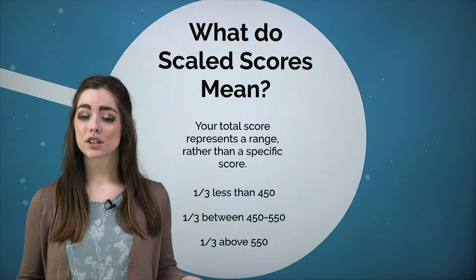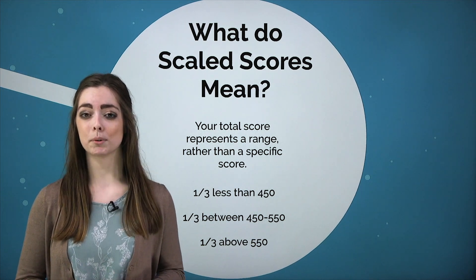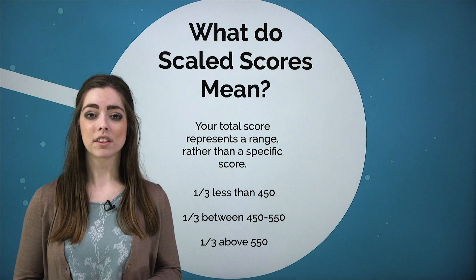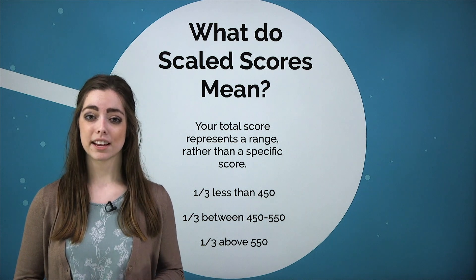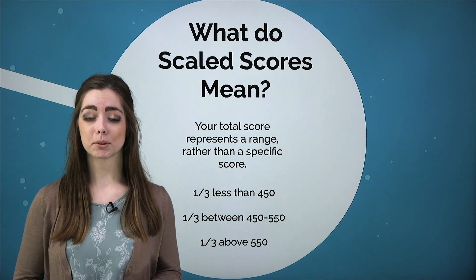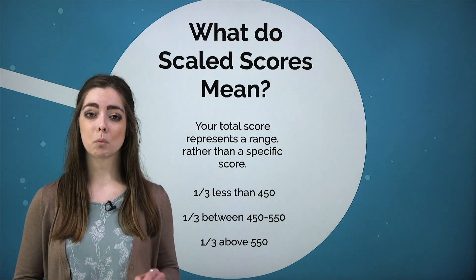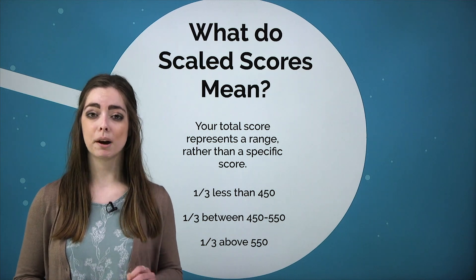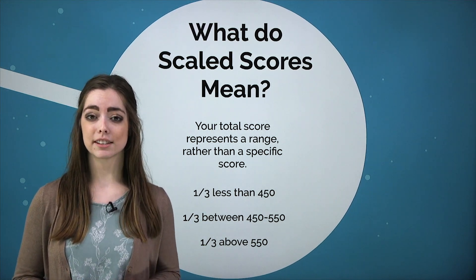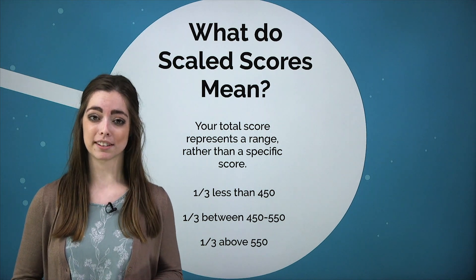It's also important to understand that SAT scoring follows a normal distribution. This results in one-third of all test takers scoring 450 or below, one-third scoring between 450 and 550, and one-third scoring above 550. Scoring a 500 is generally considered the mean score, or the 50th percentile.